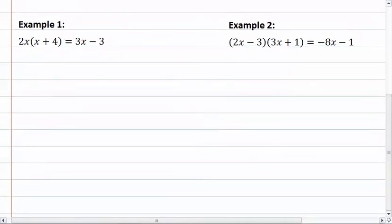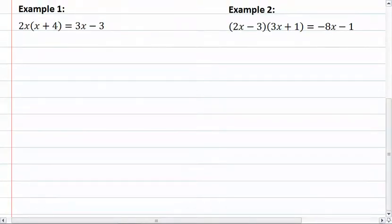So let's take a look at our first example here. We have parentheses, we cannot solve as long as we have parentheses, so we are going to distribute here, giving us 2x squared plus 8x equal to 3x minus 3. We now need to get everything on one side, so we'll subtract 3x and add 3 to the other side.